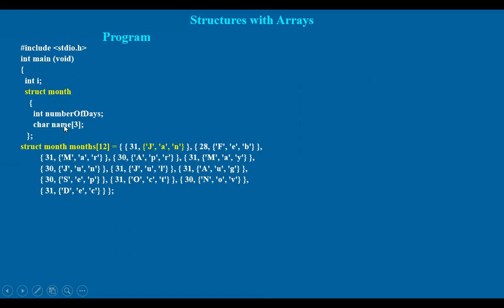Months — another variable and array. It is one structure with name month. That is one variable with a data type — an array of months.